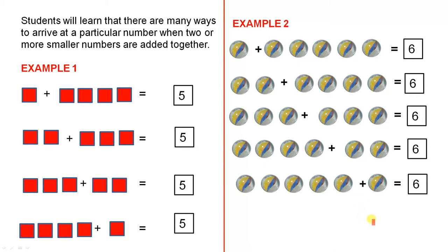So these first two examples will demonstrate to the students that you can arrive at a particular number by adding up two smaller numbers together, and the two smaller numbers can be different in each case as long as they add up to the number that you want.